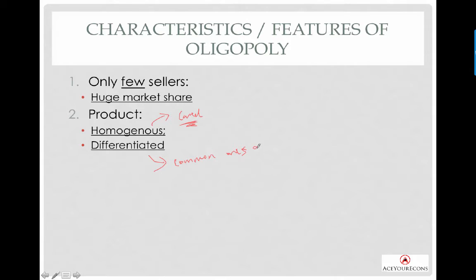Examples of oligopoly firms producing differentiated goods include Samsung and Apple. They produce smartphones that are differentiated from each other, and when you are able to differentiate your product, you are able to capture different segments of the market.